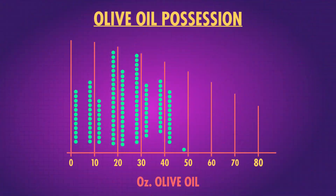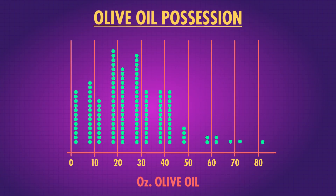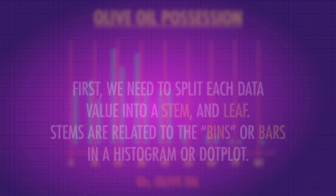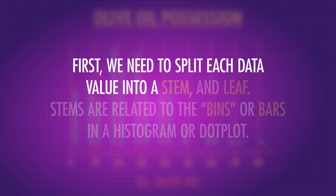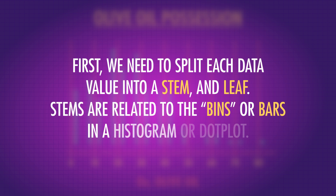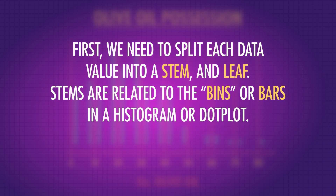However, stem and leaf plots use values from the raw data instead of dots. So we'll turn our olive oil dot plot into a stem and leaf plot — and no, I'm not going to explain my olive oil fixation. First, we need to split each data value into a stem and leaf. Stems are related to the bins, or bars, in our histogram or dot plot. Take our dot plot for example — each stack of dots might represent a range of 5 ounces.